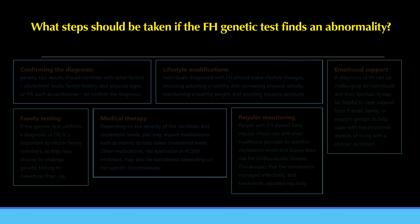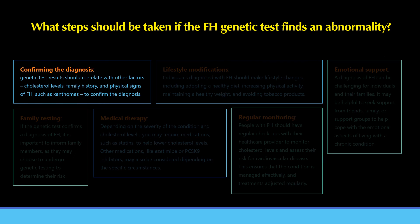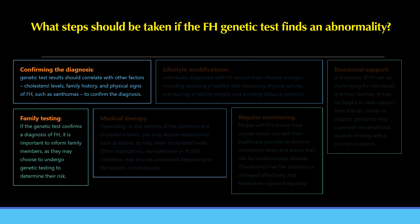What steps should be taken if the FH genetic test finds an abnormality? If an FH-related genetic abnormality is found, the following steps are recommended. First, confirm the diagnosis: genetic test results should correlate with cholesterol levels, family history, and physical signs of FH such as xanthomas. Second, family testing: if the genetic test confirms FH, it is important to inform family members, as they may choose to undergo genetic testing to determine their risk.